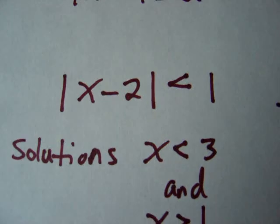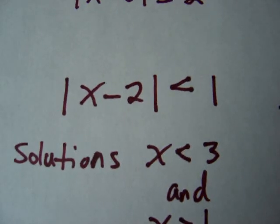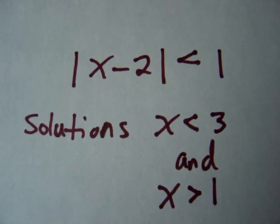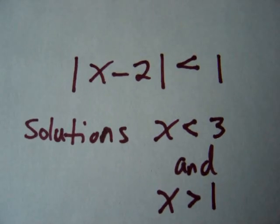If we solve this, the solutions are x is less than 3 and x is greater than 1. So if you're less than 3 and greater than 1, it's coming together.